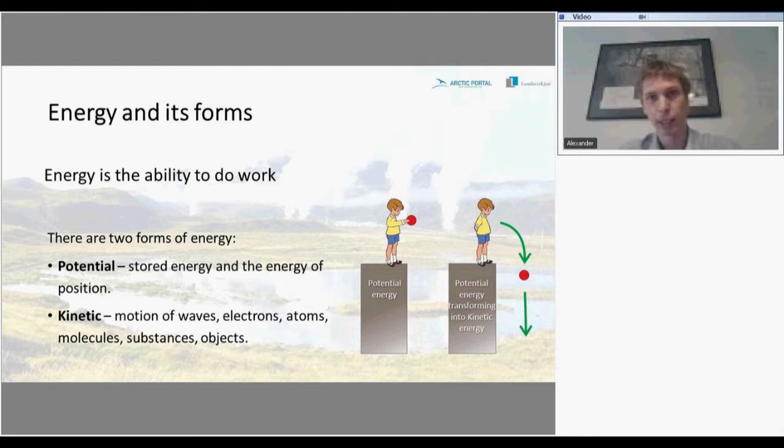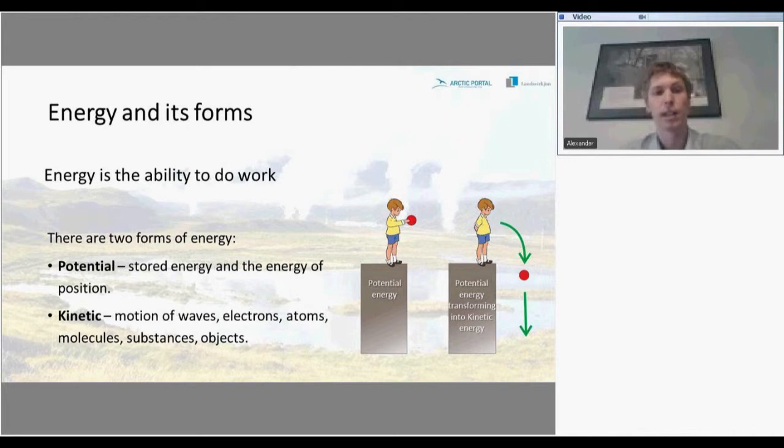There are two forms of energy. Potential energy — energy which is stored inside of an object — and kinetic energy, the so-called energy of movement. A clear example of kinetic energy is the movement of waves, electrons, atoms, molecules, substances, and other objects.